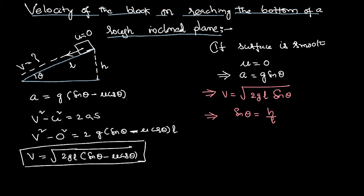By substituting this value, final velocity will become root 2gL, and sin theta is h by L. I can cancel L and L, and velocity equals root 2gh.